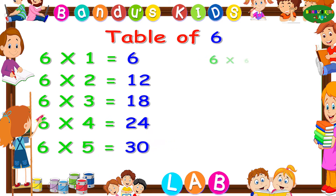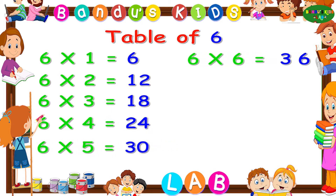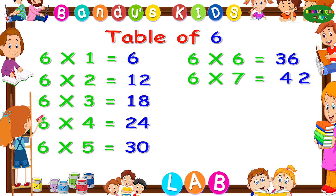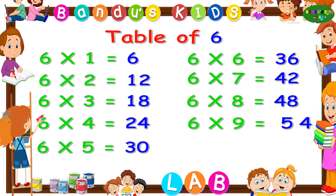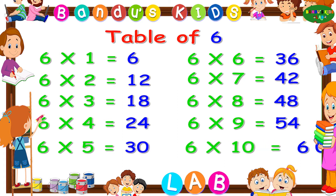Six sixes are thirty-six. Six sevens are forty-two. Six eights are forty-eight. Six nines are fifty-four. Six tens are sixty.